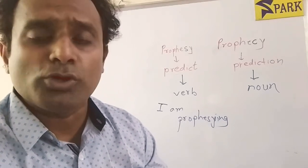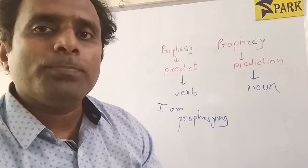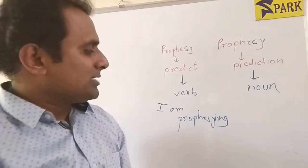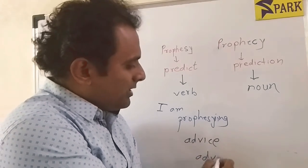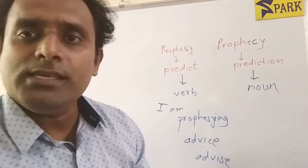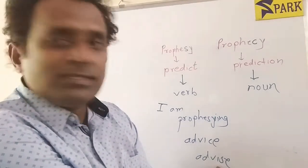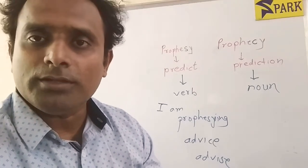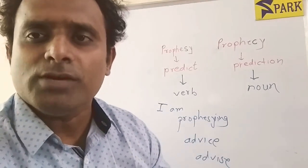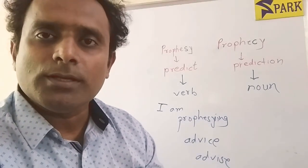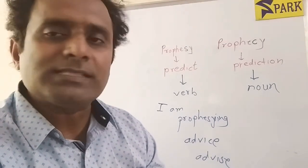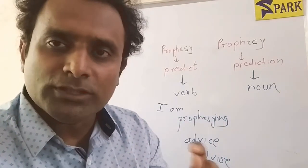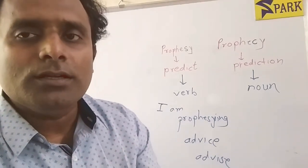There are other words with a similar distinction, such as advice and advise. Whenever there is C it is a noun, and whenever there is SE it is a verb. So 'it is my advice that you should do exercises regularly' uses the noun, while 'I advise that you should do exercises regularly' uses the verb. You will find a similar difference between device and devise, and license and licence — whenever there is S in the spelling it is generally a verb, and whenever there is C it is a noun.